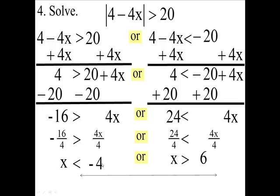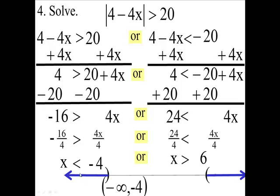Now we're saying numbers that are less than negative 4. So if you put negative 4 on the number line, we're going to say numbers to the left of negative 4, and to the right of 6 — numbers like 7, 8, 9, 10, 20, they're all to the right of 6. You're not going to fill in the dot; you're going to have a parenthesis because it's just less than and just greater than. In interval notation, we're going from negative infinity up to and not including negative 4, and then union that with going from 6 on to infinity going to the right.